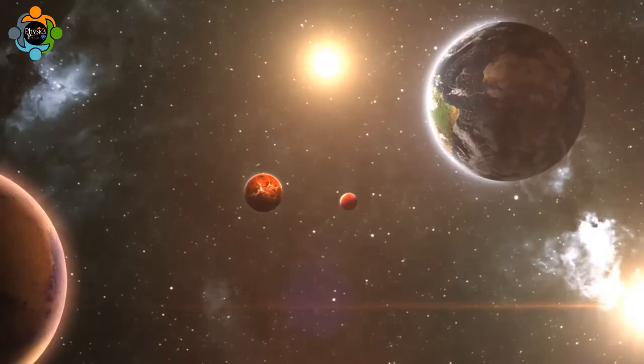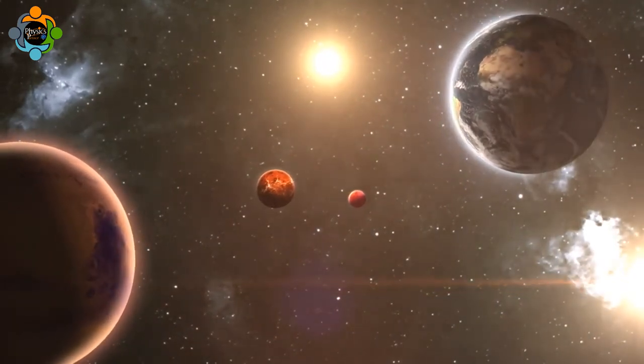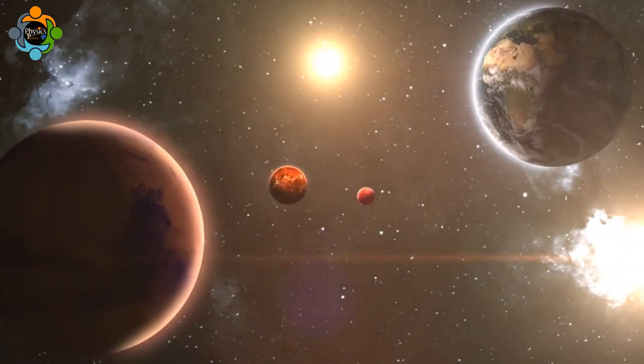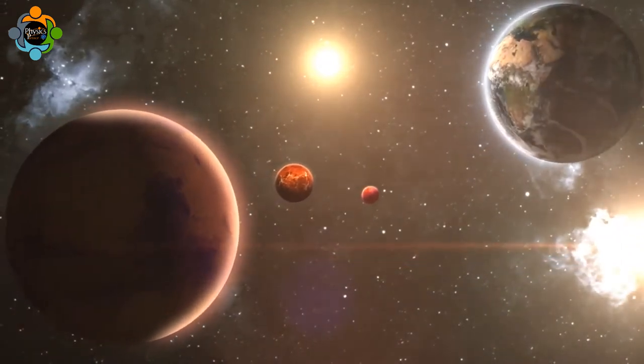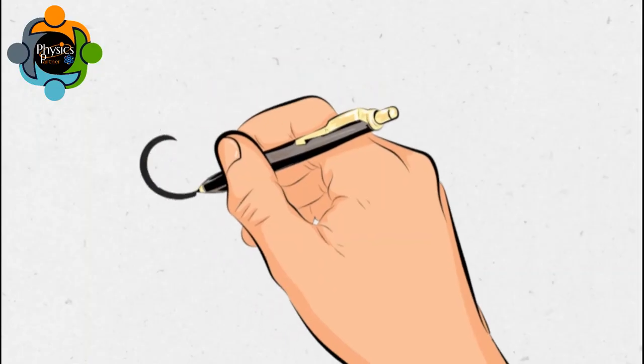In conclusion, Kepler's third law provides valuable insight into the dynamics of our solar system and beyond, shedding light on the relationship between a planet's orbital period and its distance from the Sun.